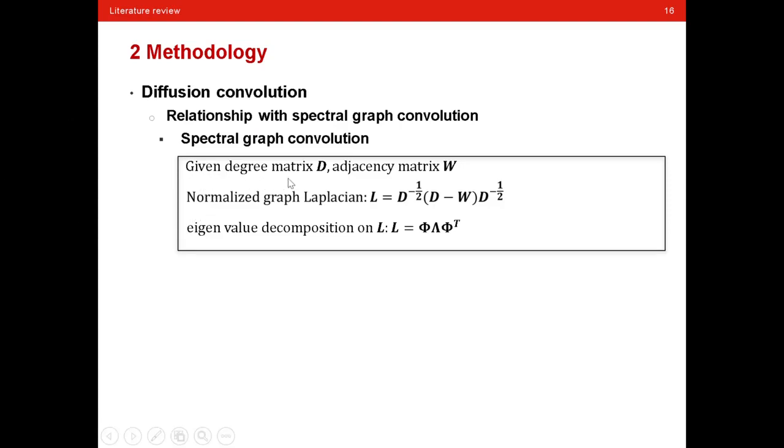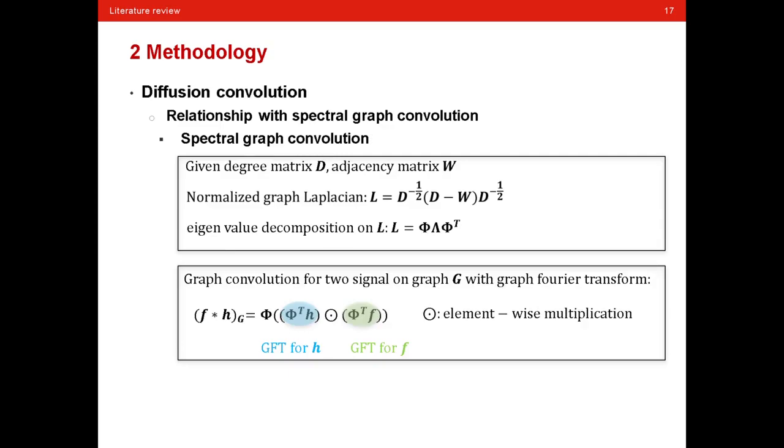Now let's have a review on spectral graph convolution. First, given degree matrix D and adjacent matrix W on a graph, the normalized graph representation is calculated in this way. And the eigenvalue decomposition on the representation is calculated in this formula. It should be noted that the normalized graph representation and the corresponding eigenvalue decomposition are the fundamental parts of spectral graph convolution. Then the graph convolution for two signals on graph G with graph Fourier transform is defined as follows. And you can see this one is the graph Fourier transform for signal H, while this one is the graph Fourier transform for F. And the multiplication between this and that gives the inverse graph Fourier transform.